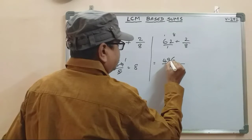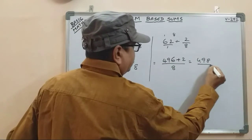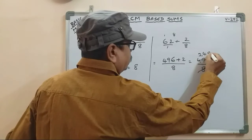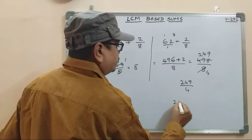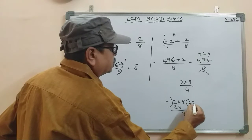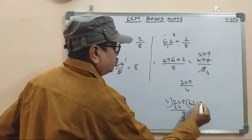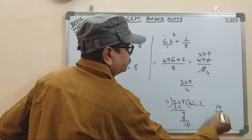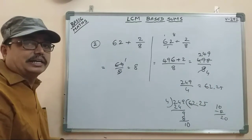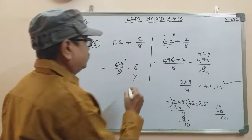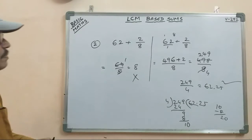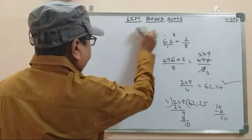496 plus 2 is 498. Divide by 8 — using cancellation: 2 table, 2 into 4 is 2, 2 into 4 is 2 — gives 249 by 4. Division: 249 by 4. So LCM based on the way is very simple. We can do it.